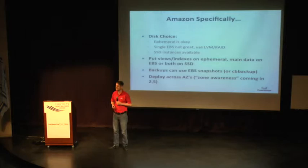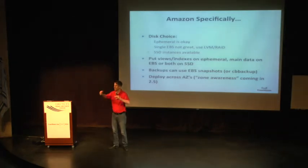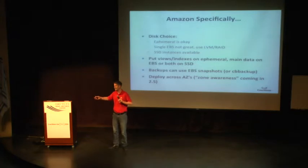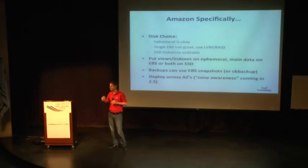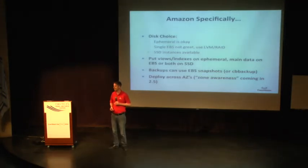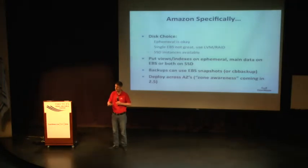What we typically see is customers scale out to a certain point and then decide they have too many nodes and want to shrink down and scale them up. A practice I've seen especially in Amazon is going from three nodes — let's call them M2 extra large — three to five to ten, but now at ten nodes I'd rather go into the SSD instances and shrink it back down to five. That's perfectly reasonable with Couchbase through our rebalancing and always-on maintenance. But just going from three M2 extra large nodes to three SSD nodes is not going to give you as much of a benefit.